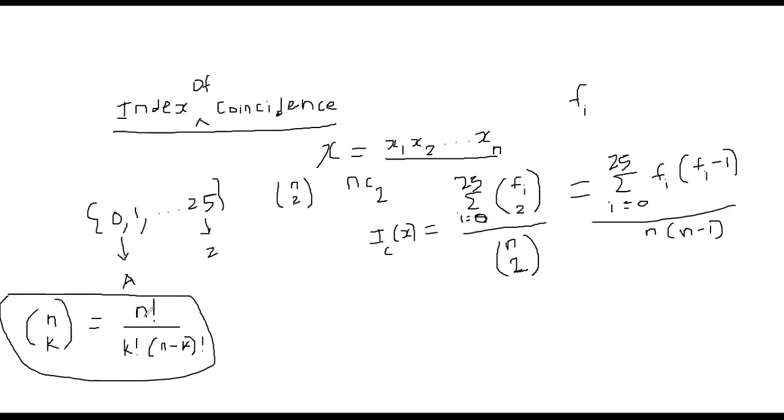So what you are left with is this n into n minus 1 factor. That's what you're seeing. The 2 will get cancelled out on the numerator and denominator because the numerator also has a 2 factorial. That's basically it.